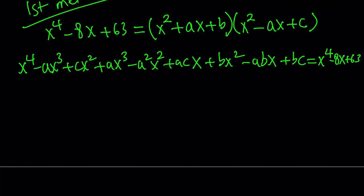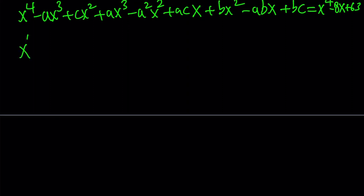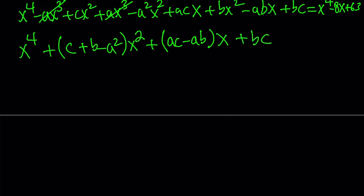Now in this case I want to simplify this a little bit so let's go ahead and rearrange. x to the fourth plus the coefficients of x cubed and x squared but x cubed cancels out. Leaving us with c plus b minus a squared all multiply by x squared. And then the coefficient of x is ac minus ab and the constant term is bc.